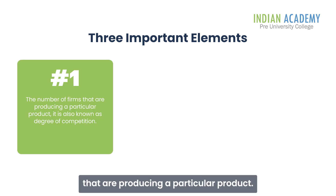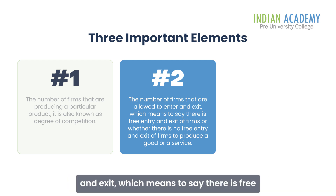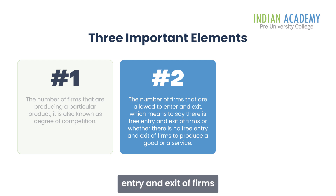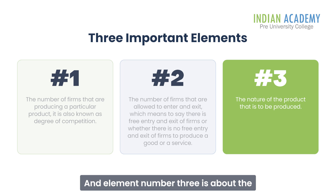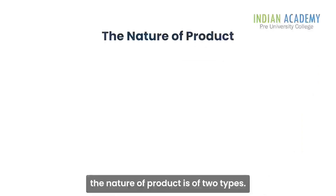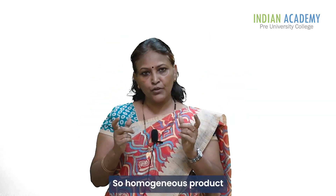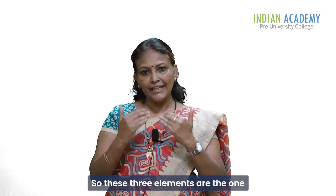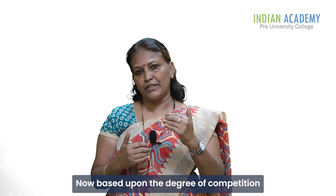The market structure depends upon three important elements. Element number one: the number of firms producing a particular product, also known as the degree of competition. Element number two: whether there is free entry and exit of firms or not. Element number three: the nature of the product to be produced — which can be either a homogeneous product or a heterogeneous product. These three elements decide the market structure.